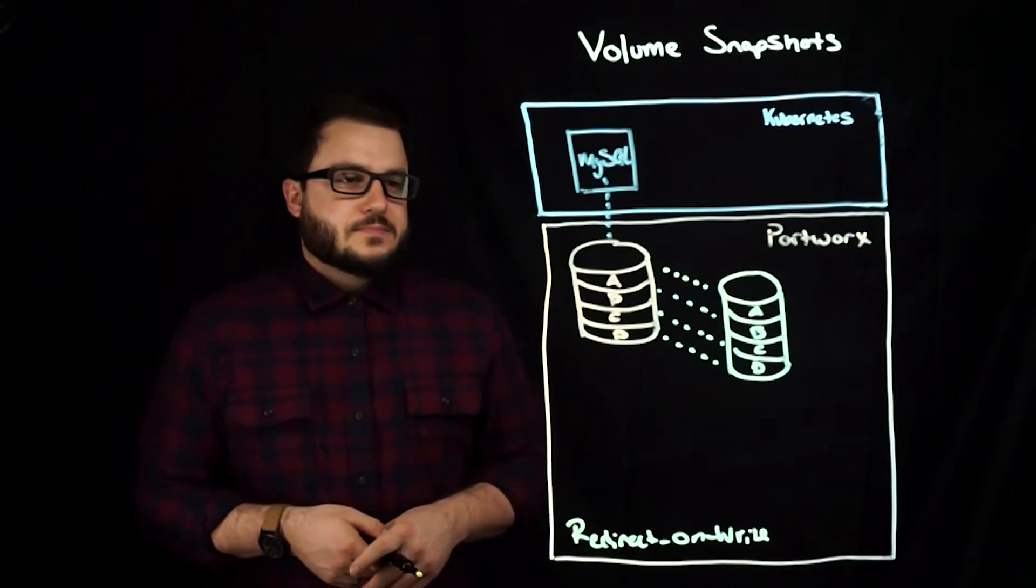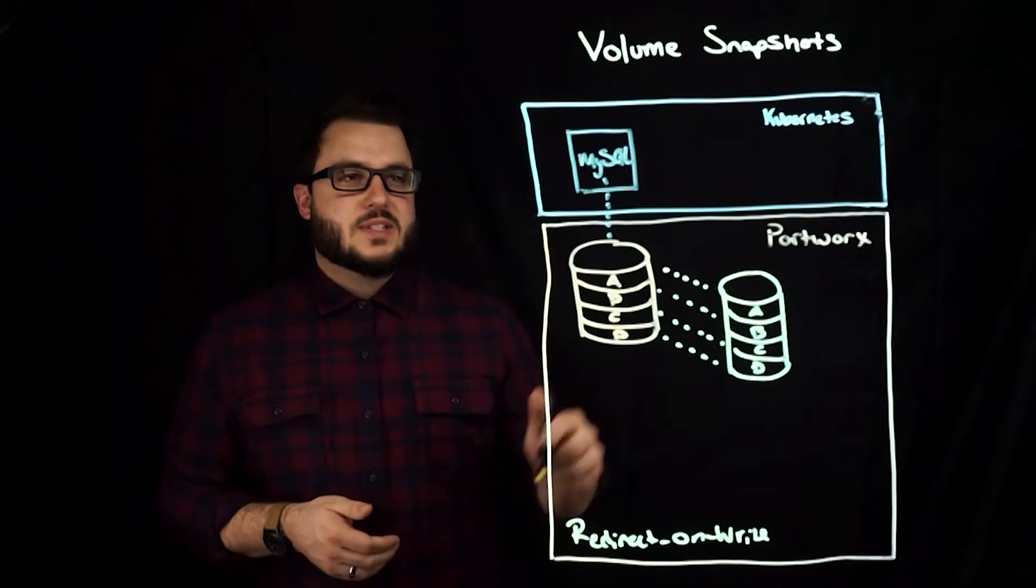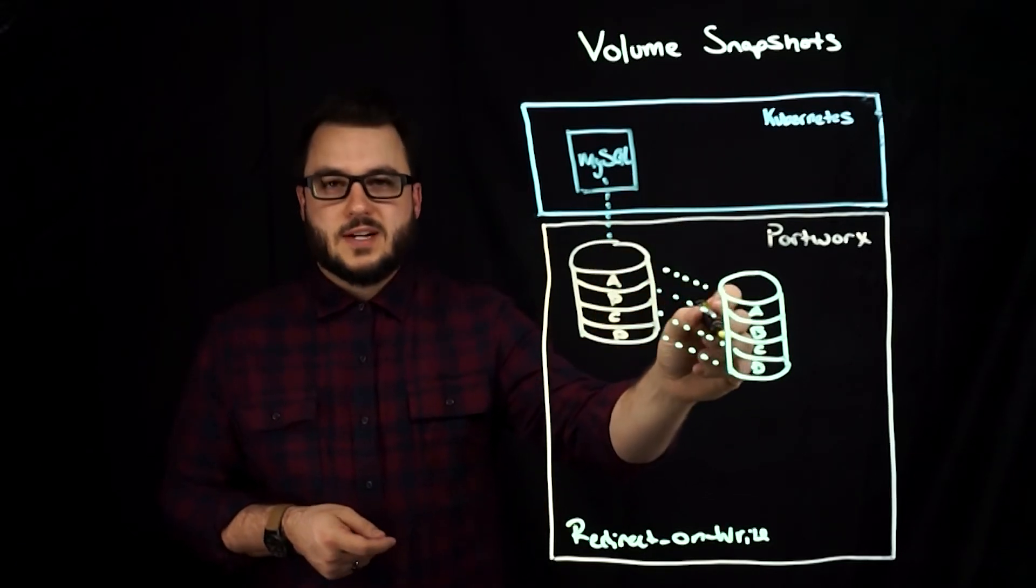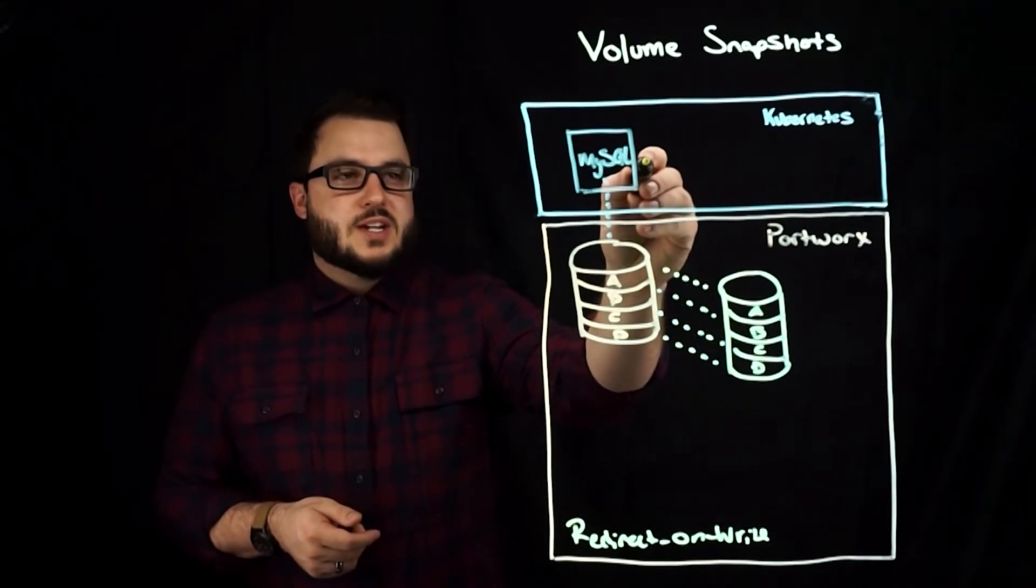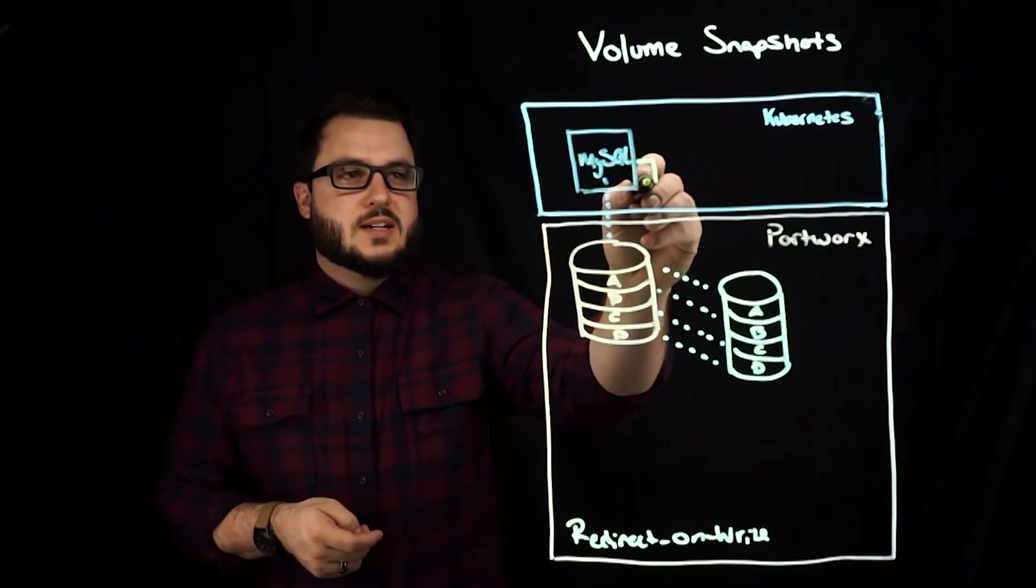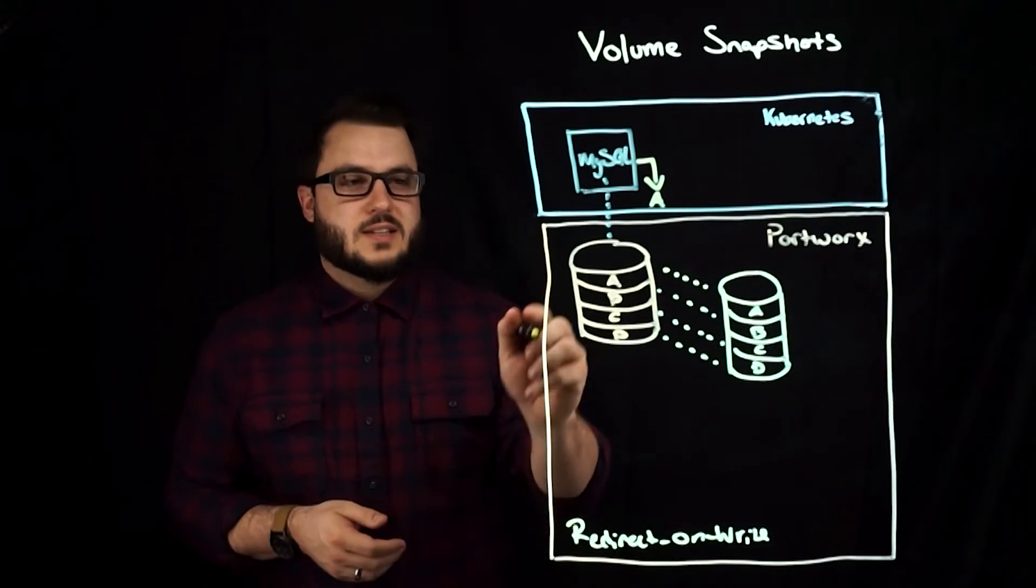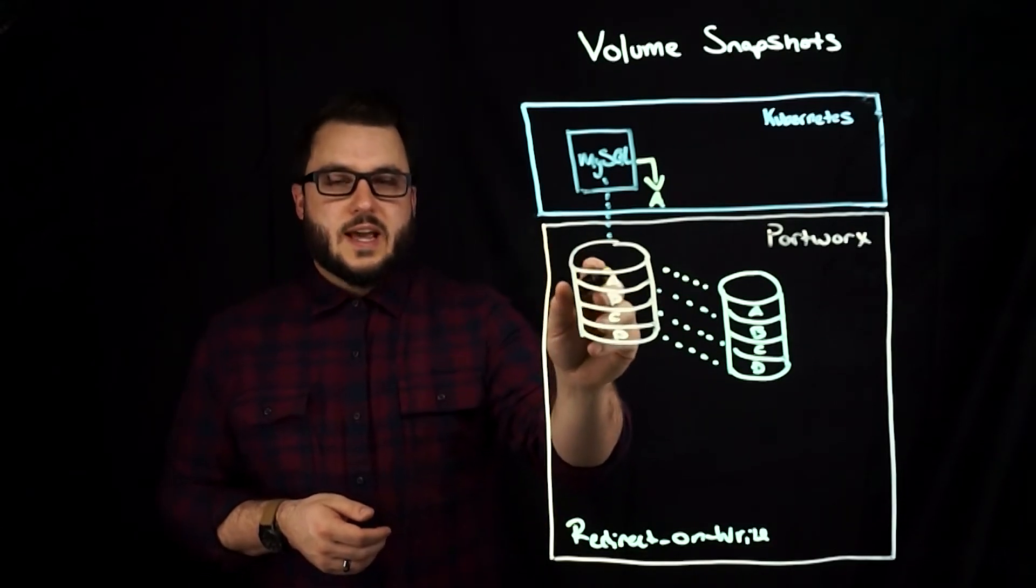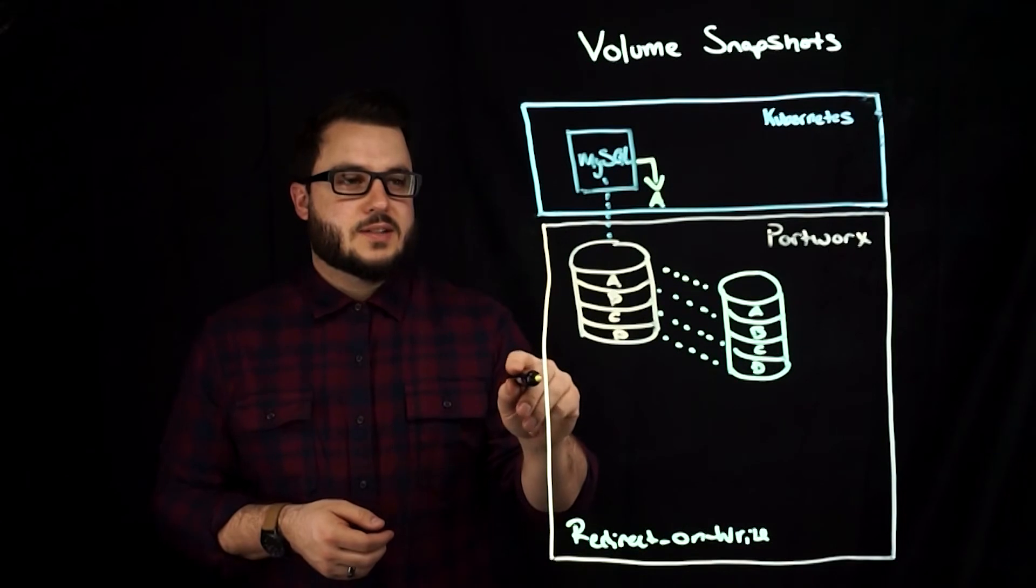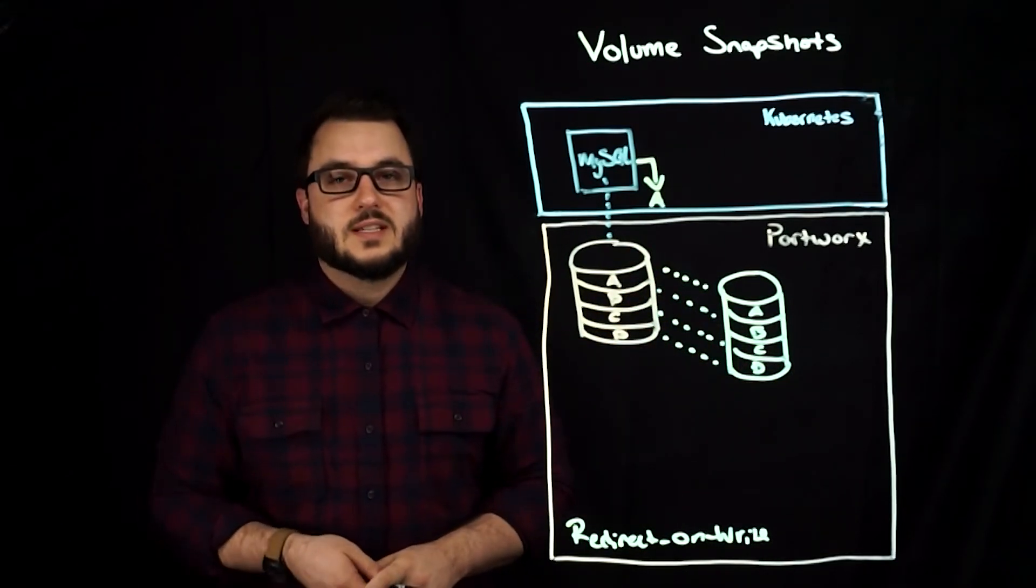Now when a write comes in, say after a snapshot is taken, the application wants to write to block A. Now we know that the original volume can't be modified because our snapshot needs to reference the actual data blocks within that volume.